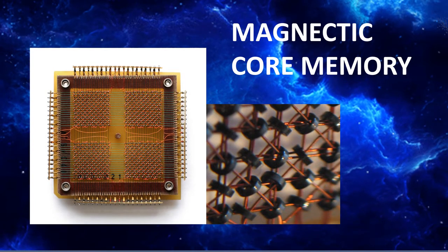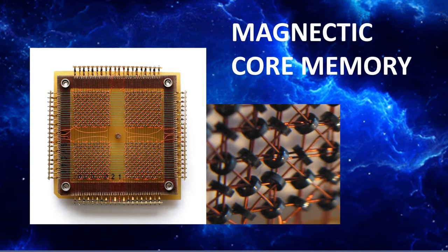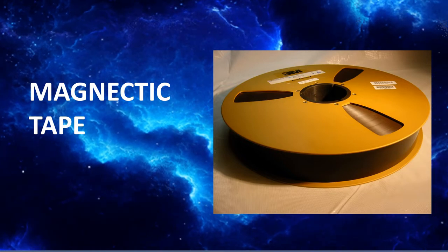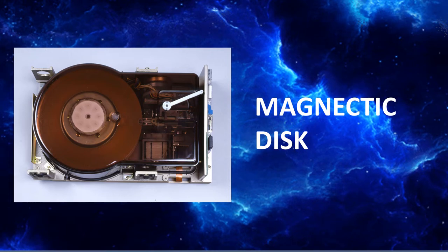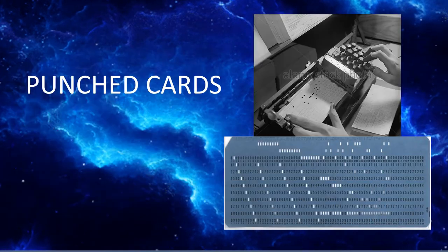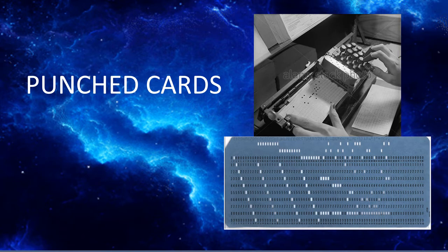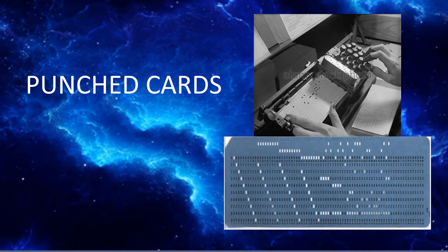Magnetic core technology is used for primary memory. The magnetic tapes were used for secondary storage. The input was still through punched cards and the output using printouts.